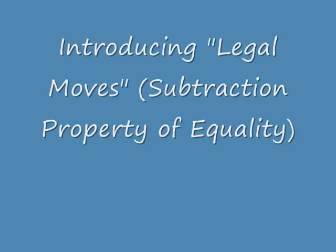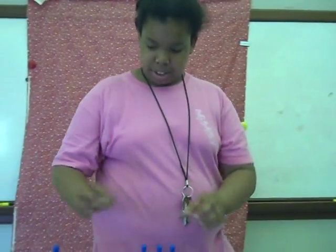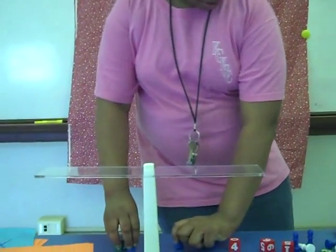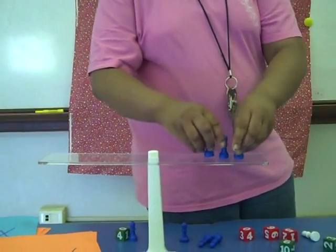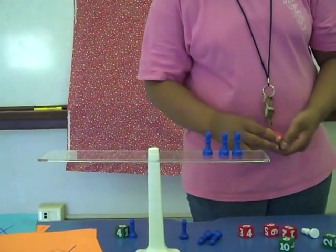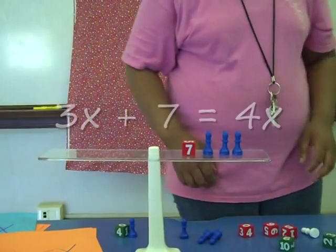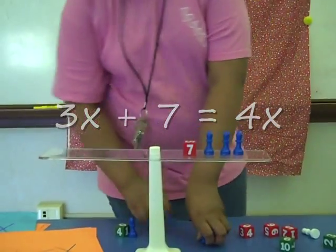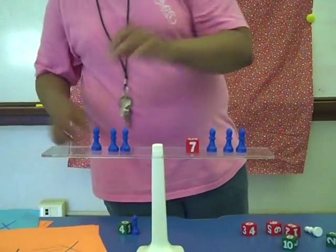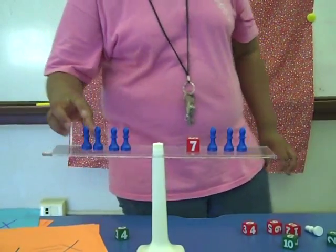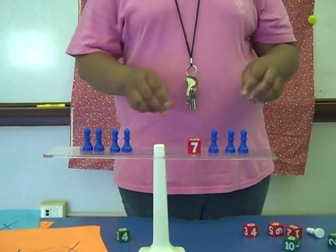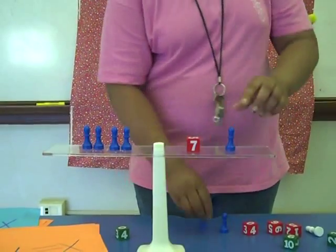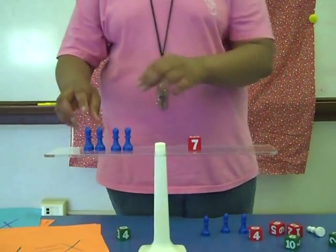So x equals 2. First we're going to put there 3x plus 7 equals 4x. Then we're going to do a legal move. So there's 3 on this side. So you're going to take the other side.